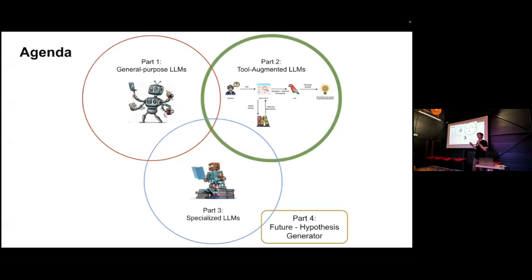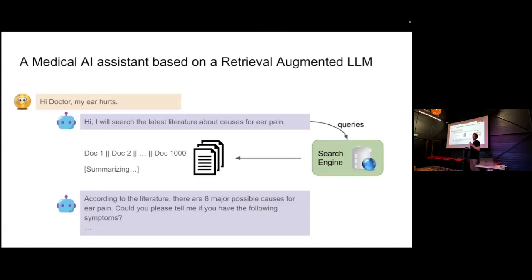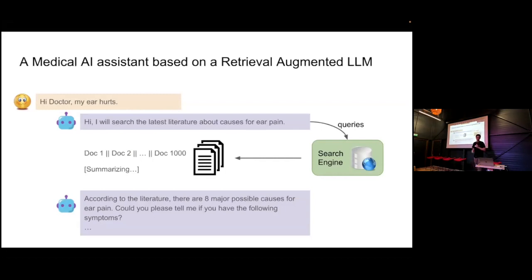Many people are starting to work on tool-augmented large language models. Suppose you want to create a medical AI assistant where the LLM is coupled with a search engine. A patient says 'my ear hurts,' and the LLM searches the latest literature, retrieves 1,000 relevant documents, and summarizes them. It then asks the patient about possible symptoms. But would you trust a doctor who says 'hold on, let me search Google Scholar to make my predictions'? It feels like something is missing in this pipeline.